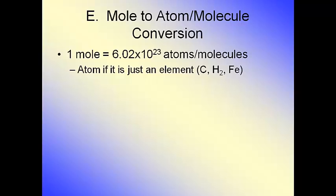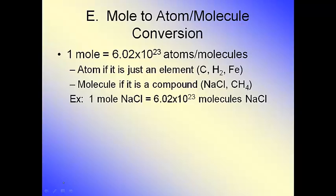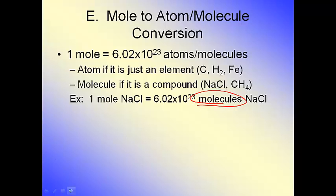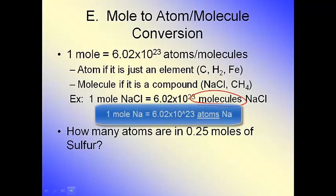If you're talking about carbons or hydrogens or ions or calciums or anything like that, then it's always going to be atoms. But if you're dealing with a compound, a substance that's composed of two or more elements, then you're dealing with molecules. For example, one mole of sodium chloride is 6.02 times 10 to the 23rd molecules of sodium chloride. But one mole of sodium is 6.02 times 10 to the 23rd atoms of sodium.